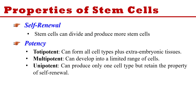As far as potency is concerned, there are three types. First is totipotency — the stem cell can change into any type of cell, as in the case of embryonic stem cells. Second is multipotency — they cannot change into any kind of cell but can develop into a limited range of cells. Third is unipotency — they can develop into only one single cell type, but they still have the property of self-renewal.